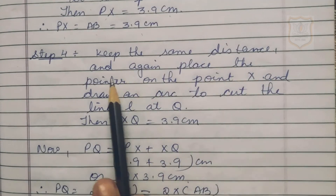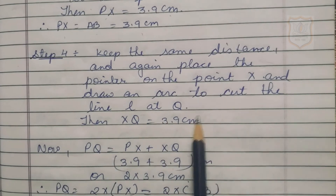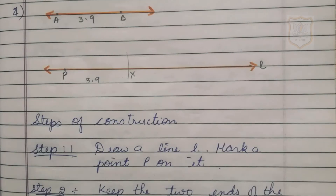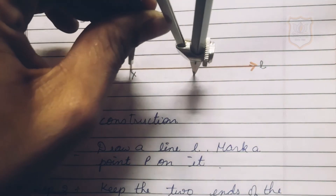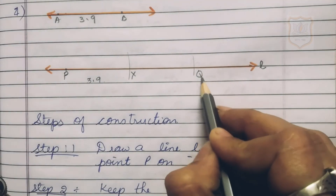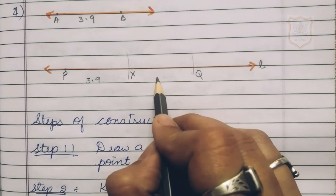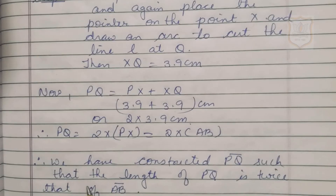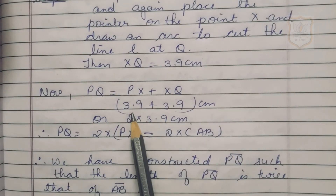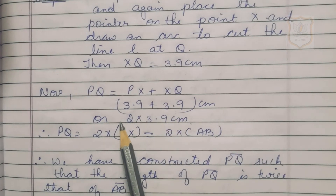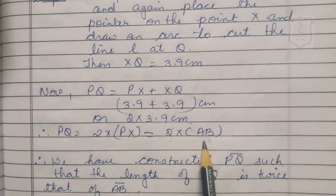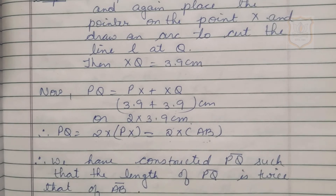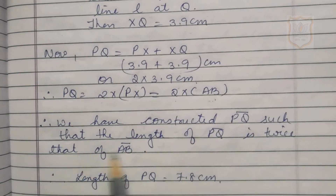Step 4: Keep the same compass distance, place the pointer on point X, and draw an arc to cut the line L at Q. Then XQ also equals 3.9 centimeter. Therefore PQ = PX + XQ = 3.9 + 3.9 = 2 × 3.9 = 2 × AB. The length of PQ is 7.8 centimeter.